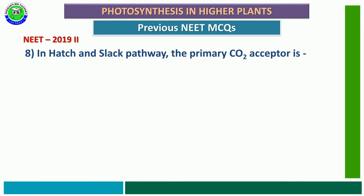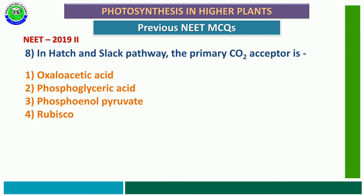Question number 8 from NEET 2019 phase 2: In the Hatch-Slack pathway, the primary CO2 acceptor is — first option, oxaloacetic acid; second option, 3-phosphoglyceric acid; third option, phosphoenolpyruvate (PEP); fourth option, Rubisco. The correct answer is the third option — PEP. The Hatch-Slack pathway is also called the C4 pathway. In the mesophyll cell, PEP acts as the primary CO2 acceptor. After fixing CO2, it becomes oxaloacetic acid, the first product with four carbons.